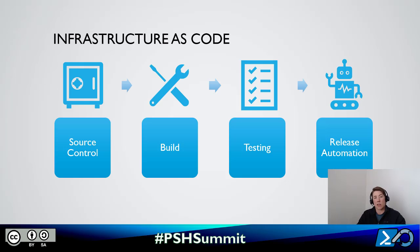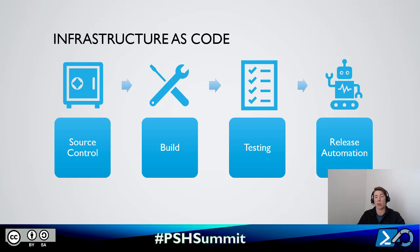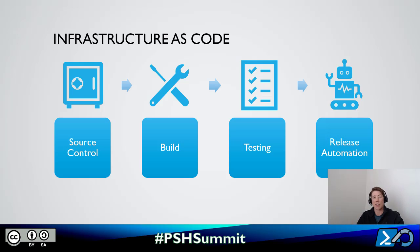Before we get into Desired State Configuration, I want to cover Infrastructure as Code and what that is. DSC — Desired State Configuration — gives us a framework to enable Infrastructure as Code. Infrastructure as Code is basically the idea of describing our infrastructure in code. For example, I have a VM and I've got a code file that says exactly how to build that VM.